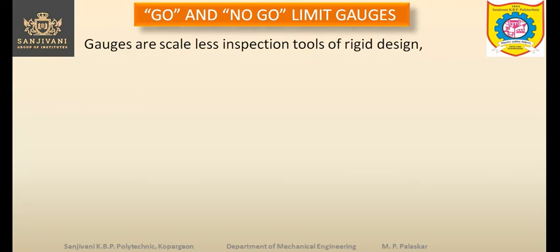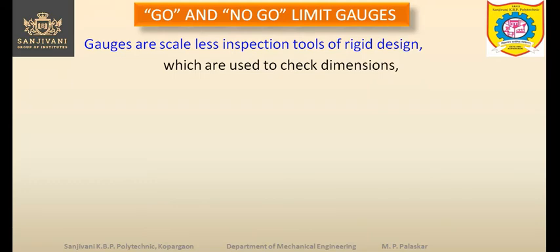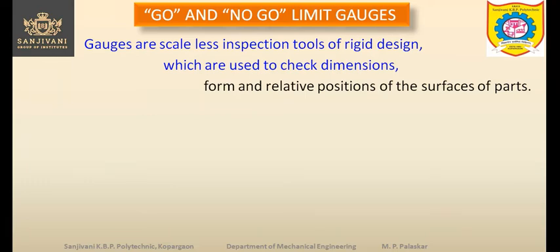Gauges are inspection tools of rigid design. The design of the gauges should be rigid because they are used again and again and are handled a lot by many people — workers, inspectors, and engineers. These gauges should be rigid and robust in construction. They are used to check dimensions, form, and relative positions of the surfaces of a part.